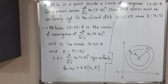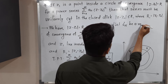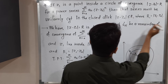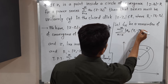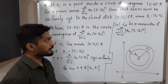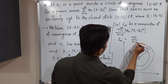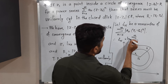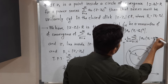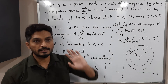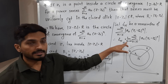Let σₙ be the remainder of the power series Σ from n = 0 to infinity of |aₙ(z₁ - z₀)ⁿ|. By definition of remainder, σₙ equals the limit as m tends to infinity of Σ from n = N to m of |aₙ(z₁ - z₀)ⁿ|. Since we have applied the modulus, σₙ is a series of real numbers, so we write simply σₙ without z.